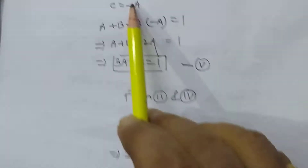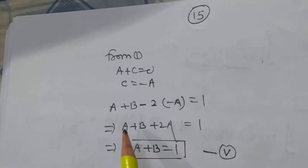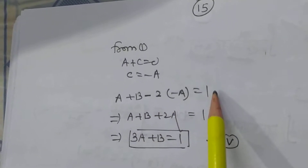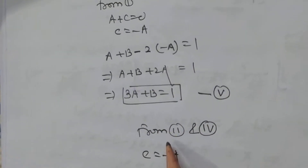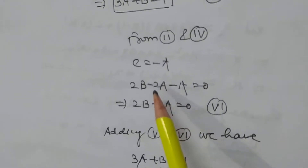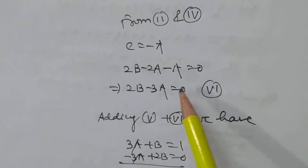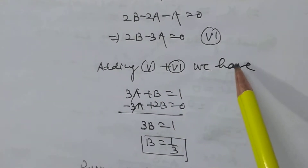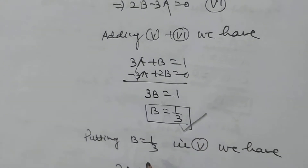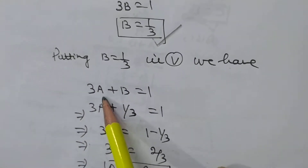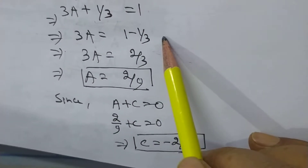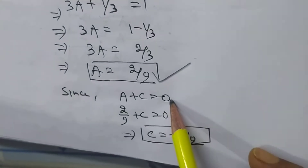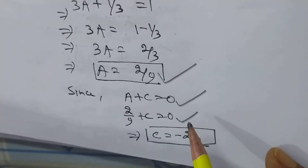After simplifying: a + c = 0, so c = -a. Substituting into a + b - 2(-a) = 1 gives 3a + b = 1. From 2b - 2a + c = 0, substituting c = -a gives 2b - 3a = 0. Adding equations 5 and 6, we get b = 1/3. Putting b = 1/3 into 3a + 1/3 = 1 gives 3a = 2/3, so a = 2/9. Then a + c = 0 gives c = -2/9.